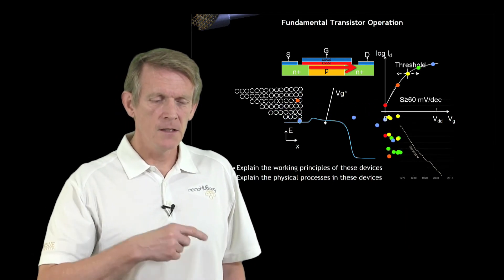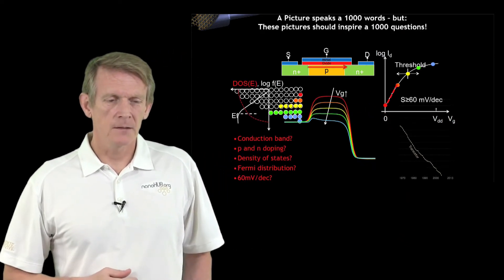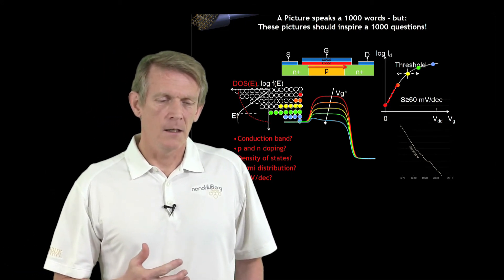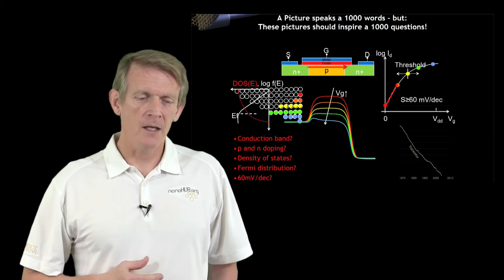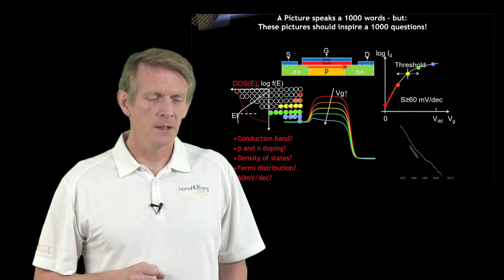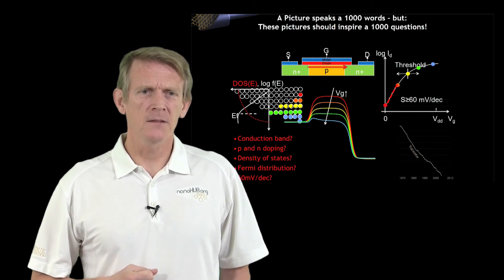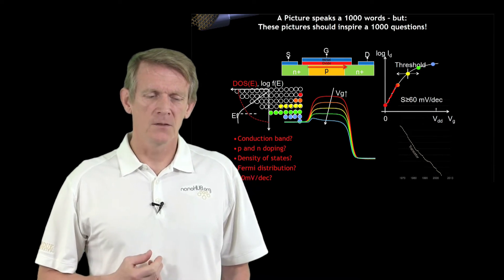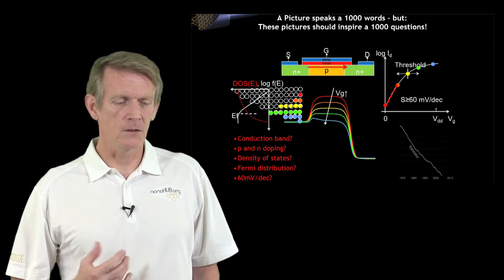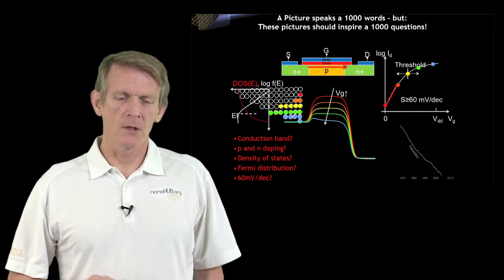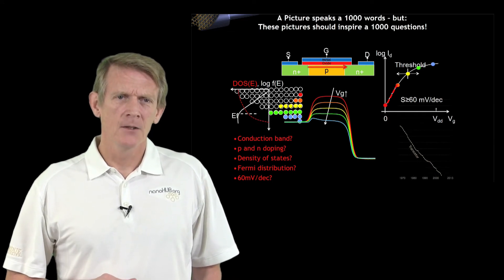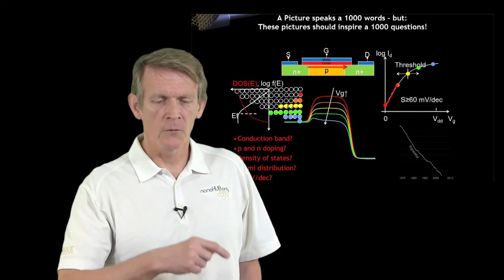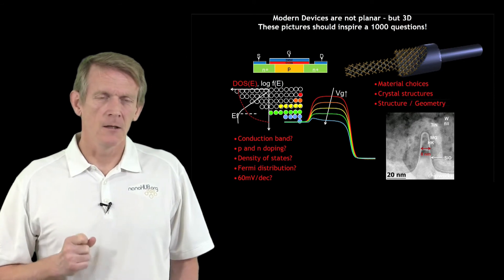Here we have talked about a conduction band. I have talked about a source and drain that has some doping to it. We have a density of states. There's a Fermi distribution of thermally distributed carriers. What does 60 millivolt per decade really mean? This raises a bunch of questions. Hopefully, we can address those throughout the course.